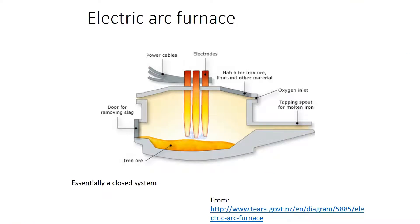We've done energy balance problems, including one for an electric arc furnace where we assumed there was no heat lost from the system. We assumed all the energy generated by the electrodes went into the metal to heat it up — a closed system. In reality things are more complex; opening the doors causes heat loss. There's a problem set on Blackboard with the solution if you're interested.